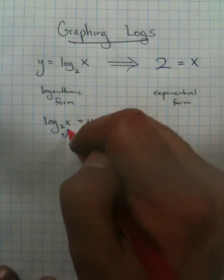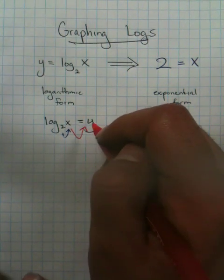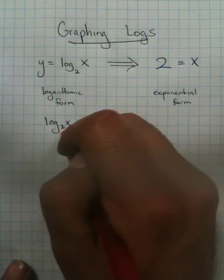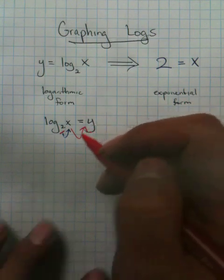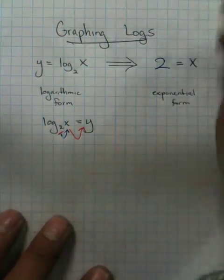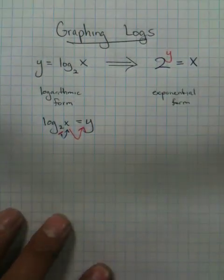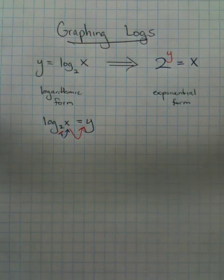And the way 2 is going to equal x is if we use this y. Now this y has to be the exponent of the subscript that you originally used. So you put a y right here. This is converting between logarithmic form and exponential form.